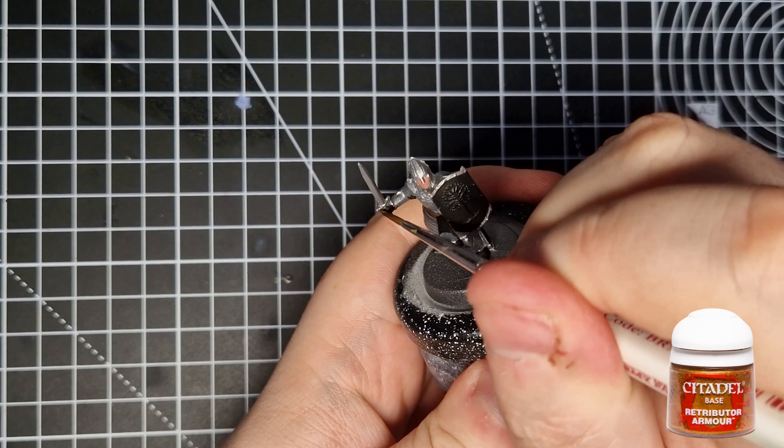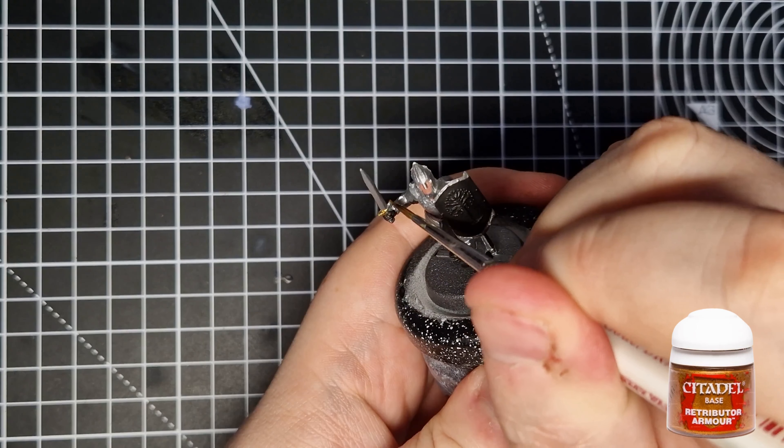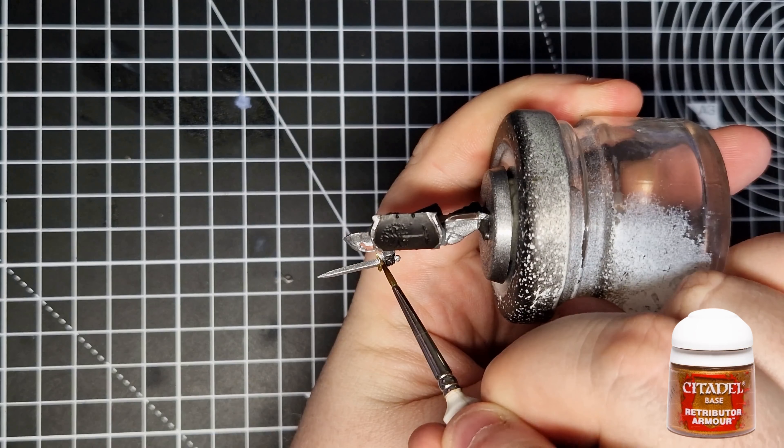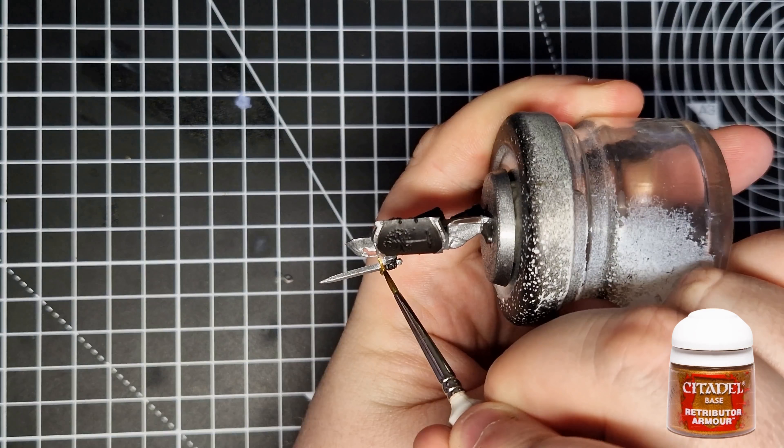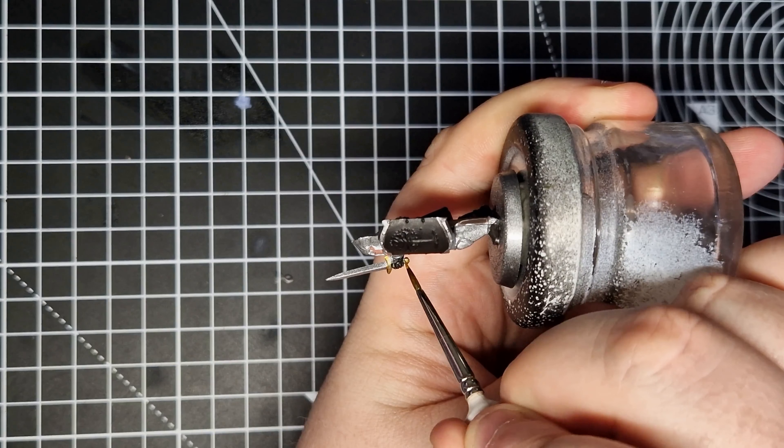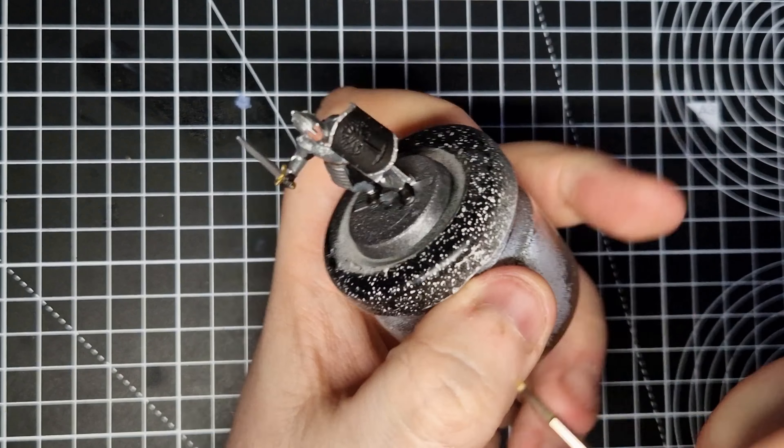Now, we're going to use some gold to break up all of the silver on the model and we're going to use Retributor Armour. We're going to use this to paint the cross guard and the pommel of the sword as well as some bits of the scabbard and the belt buckle on the front of the mini. Like I said, just to break up all of the silver.